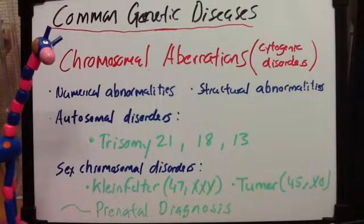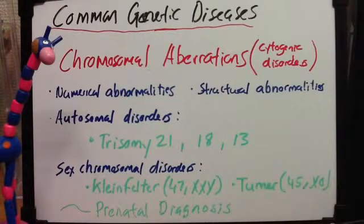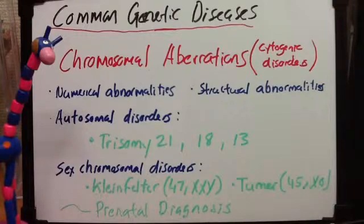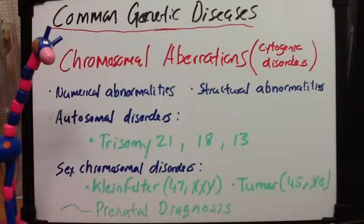Less frequent autosomal disorders include Trisomy 18, Edwards syndrome, occurring in 1 in every 8,000, and even less frequent is Trisomy 13, Patau syndrome, which is 1 in 15,000. Patau syndrome may be associated with cleft palate and polydactyly — though the speaker notes uncertainty and will need to verify those details.